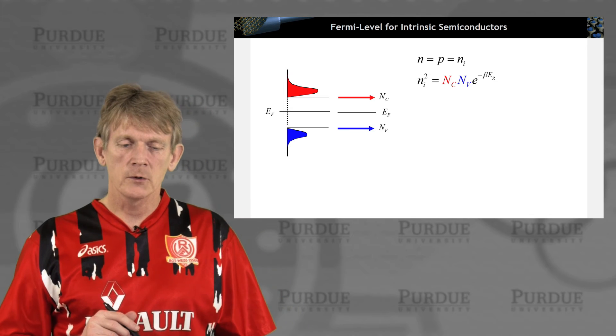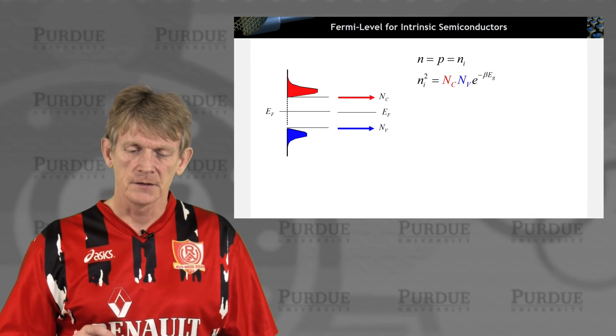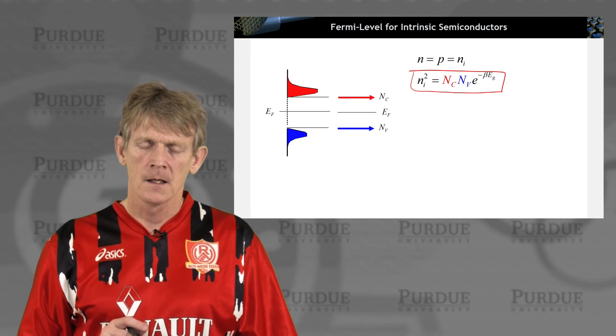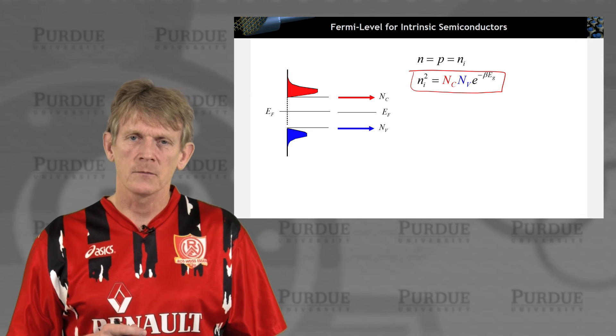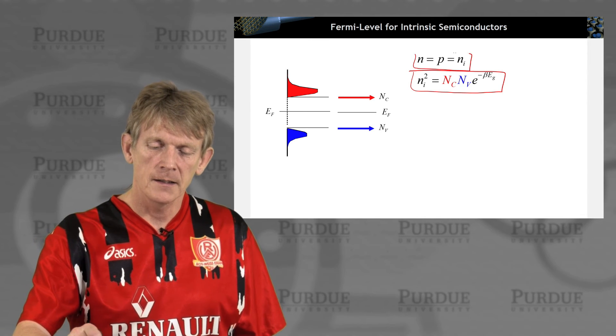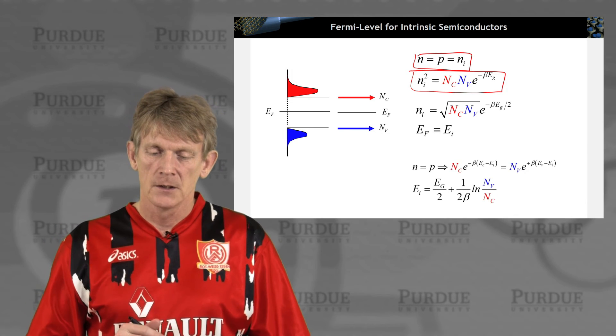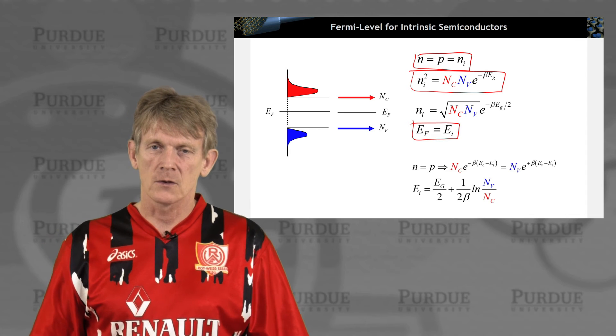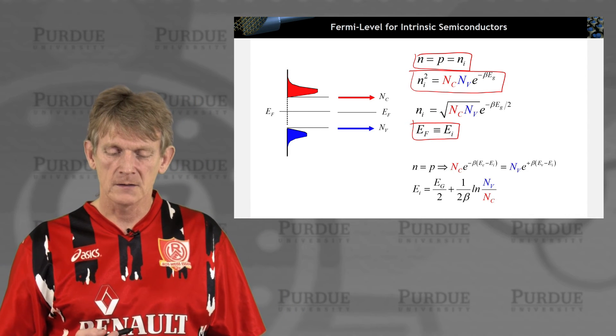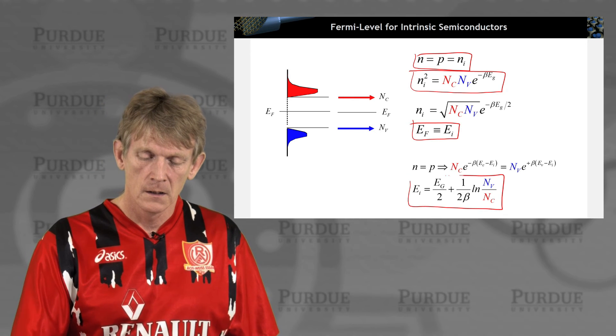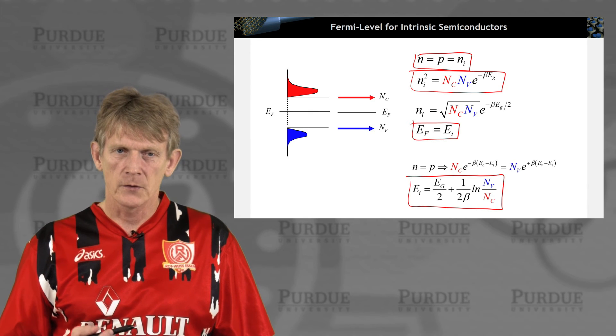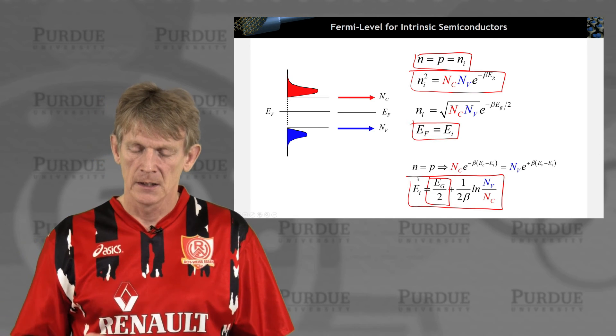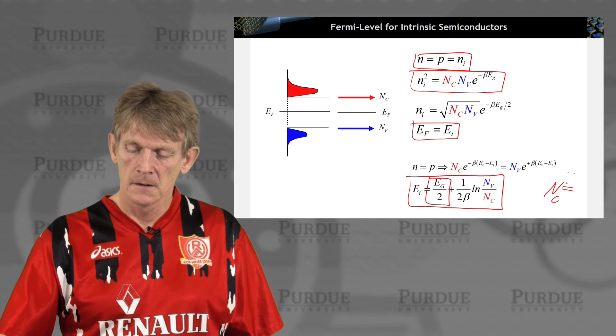So let's derive from there, where would the Fermi level be for intrinsic semiconductors? We're defining the intrinsic number of electrons in the system as Ni, and we derive it from this expression here, where both holes and electrons are at the level of Ni. So we can resolve this for Ni, and we define the Fermi function to be the so-called intrinsic Fermi function, given that you have no doping. And from there we can figure out that the intrinsic energy level, or the intrinsic Fermi level, is roughly at half gap, and it has a correction to it.